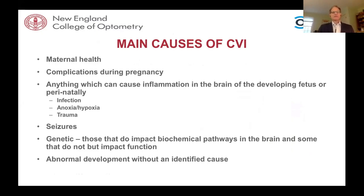The main causes of cerebral visual impairment are really dependent upon maternal health, complications during pregnancy — anything that can cause inflammation to the brain of the developing fetus, including trauma, anoxia, infection, seizures in the neonate, genetic situations that impact biochemical pathways in the brain, and abnormal development without an identifiable cause.